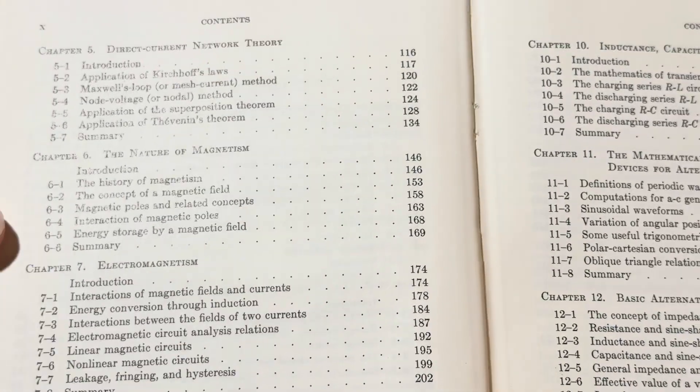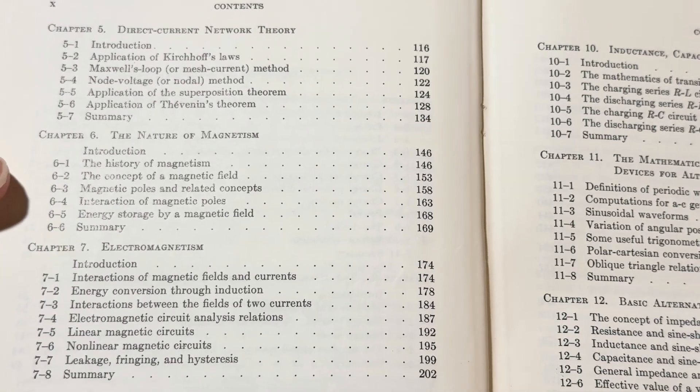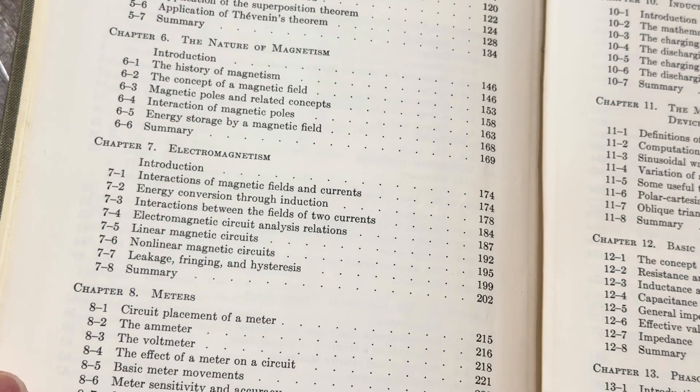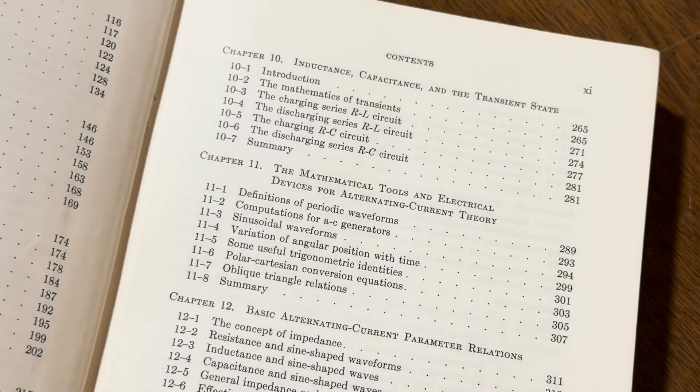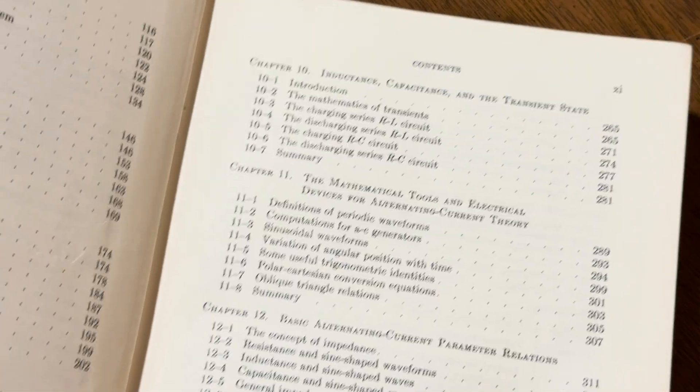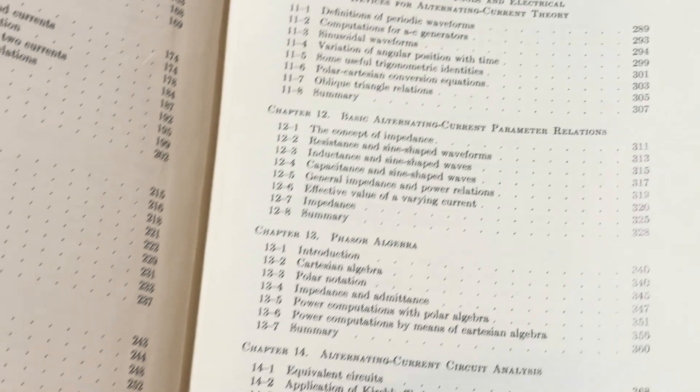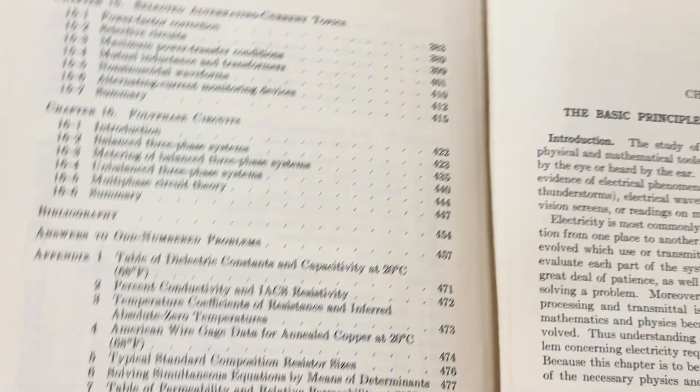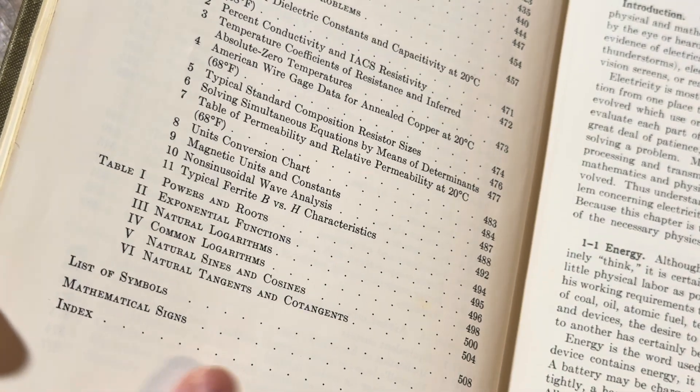I'm sorry, I just have to give it a whiff. It smells so good. The book smells incredible. Direct current network theory, the nature of magnetism, electromagnetism, meters, inductance, and capacitance. We have some more topics here. There's phasor algebra. Alternating current circuit analysis. And we have some more topics over here. And then there's a list of symbols and mathematical signs and an index.